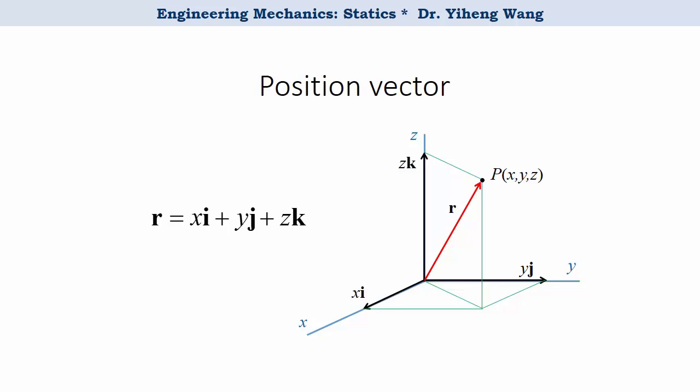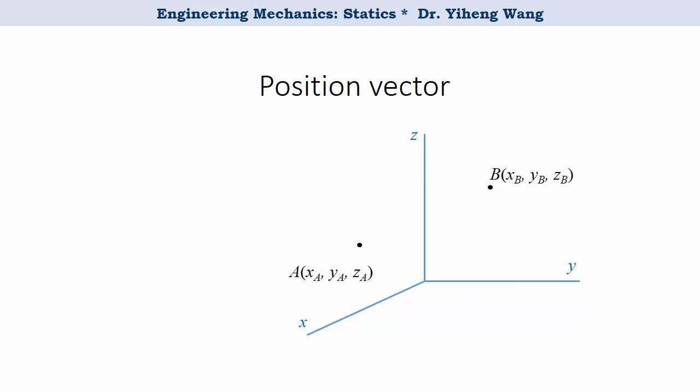As a Cartesian vector, r can be expressed as xi plus yj plus zk. If you have two points, point A with coordinates xa, ya, and za, and point B with coordinates xb, yb, and zb, and if you want to find the relative position of point B relative to point A.